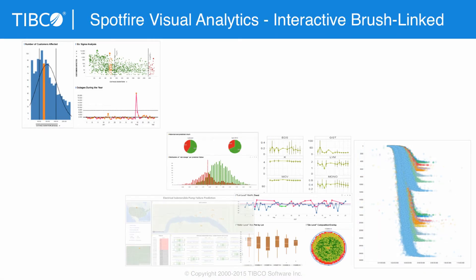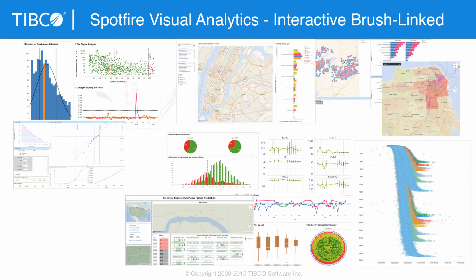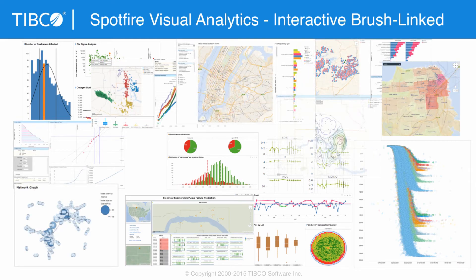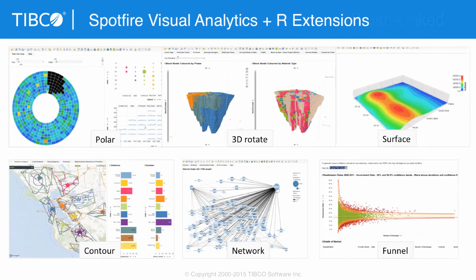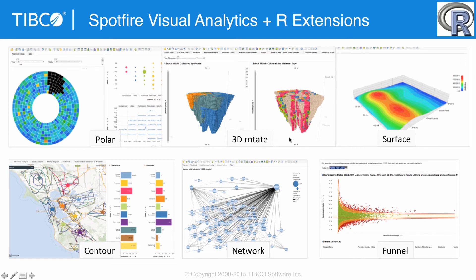Spotfire has a wonderful graphics palette — very simple to configure — an interactive brush-linked dashboard with a few clicks. You'll see a demonstration of this. The graphics palette can be extended using our TIBCO-R platform, creating polygons that can be made interactive very simply to do things like automatic outlier detection. We have some extension graphics like 3D rotation, network components, and then using R to layer areas onto maps and surfaces.